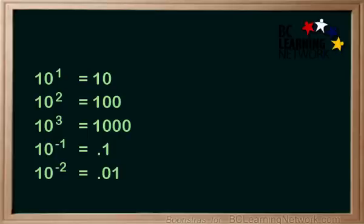In the negative direction, 10 to the negative 1 is equal to 1 over 10, or .1. 10 to the negative 2 is 1 over 10 times 10, or .01, and so on in that direction.